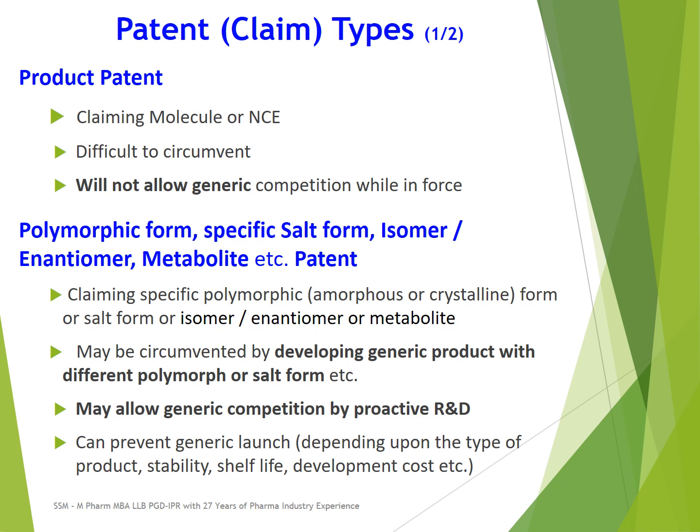The first patent type is the product patent, which claims the molecule or NCE — new chemical entity — itself. Product patent is the broadest kind of patent, providing the broadest protection to the product. It is difficult to circumvent or bypass, and generics will not be allowed until the expiry of the product patent.